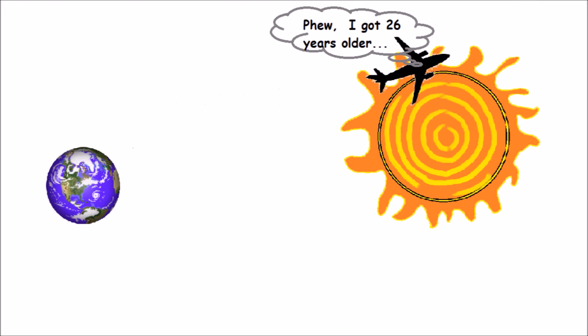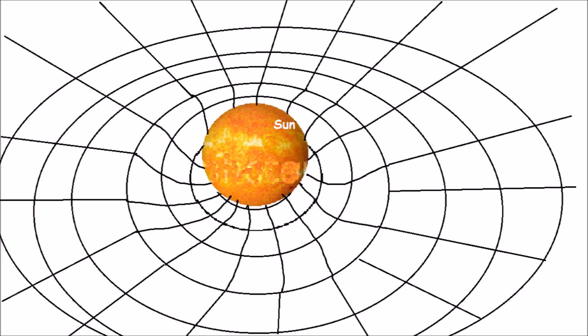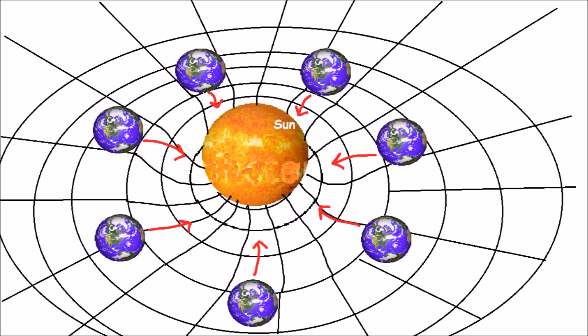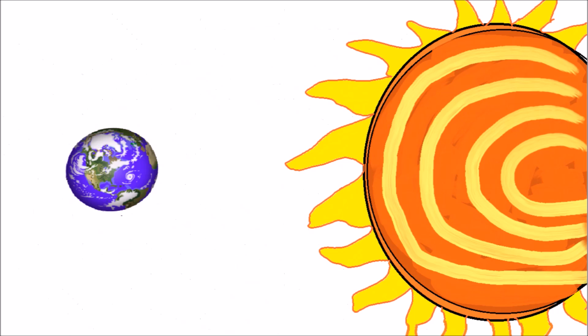The huge size of the Sun gives it strong gravity. This gravity keeps the planets orbiting in their paths around the Sun. Earth spins on its axis as it orbits the Sun. It takes 24 hours to make one rotation.